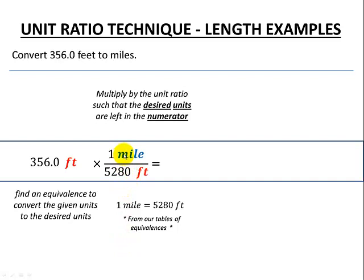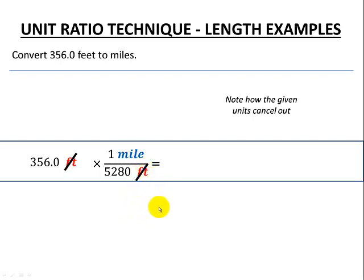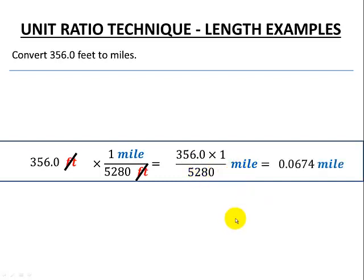Here's our unit ratio: one mile is equivalent to 5280 feet. The units cancel out — feet are in the top, feet are in the bottom, they cancel and we're left with just miles. We gather our numbers and perform the calculation: 356.0 times one divided by 5280, and we can see we only have miles left. Our final answer to four decimal places is 0.0674 miles.